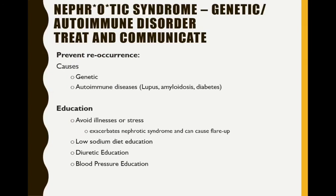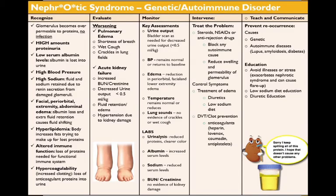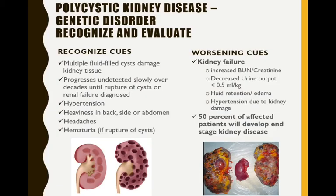Avoid exacerbations — as with all autoimmune diseases, you're giving immunosuppressant drugs and also trying to prevent flare-ups. The summary slide for nephrotic syndrome covers the key elements across the five columns. Remember, nephrotic syndrome will also appear in pediatrics, so keep these notes.